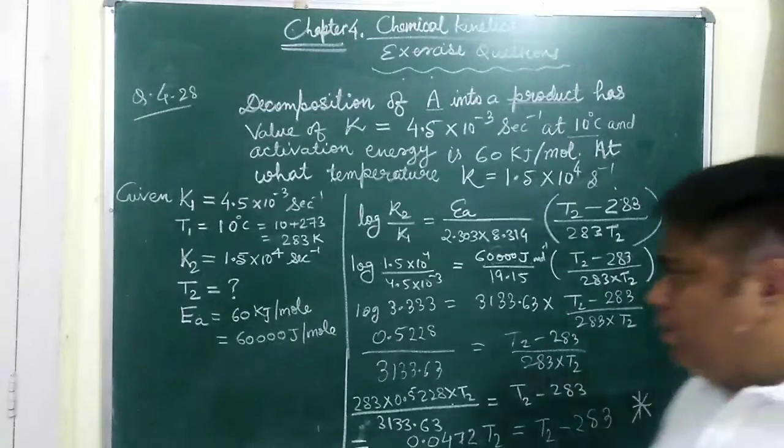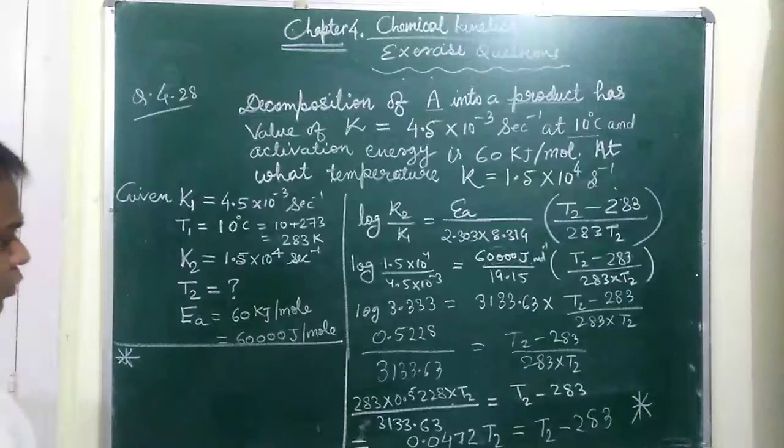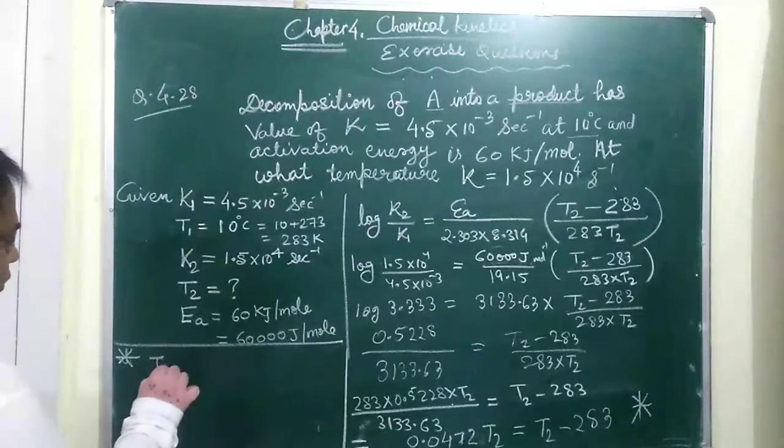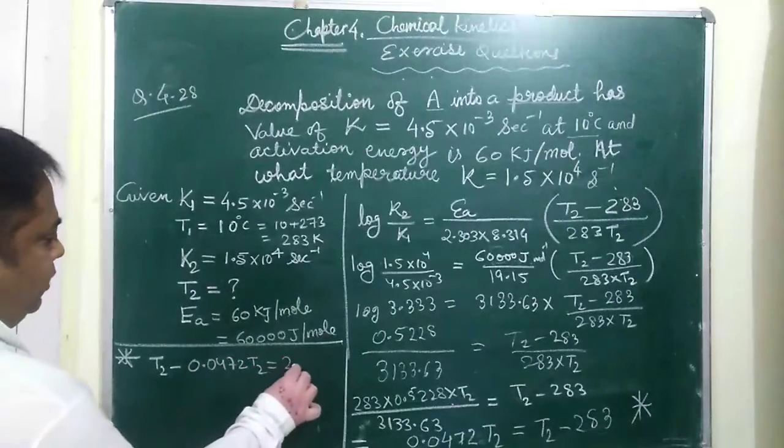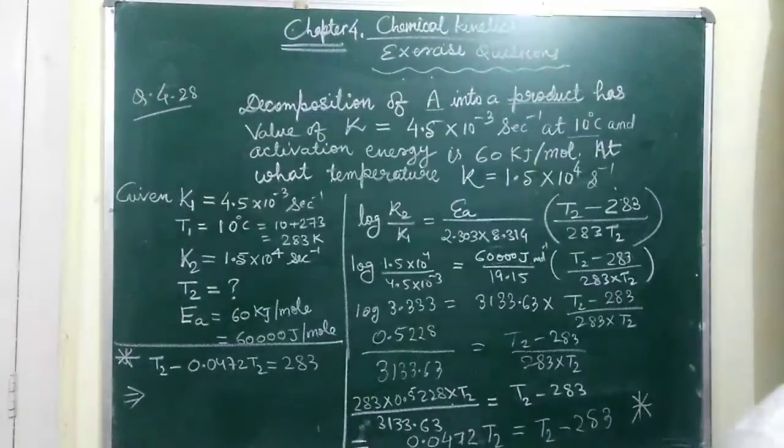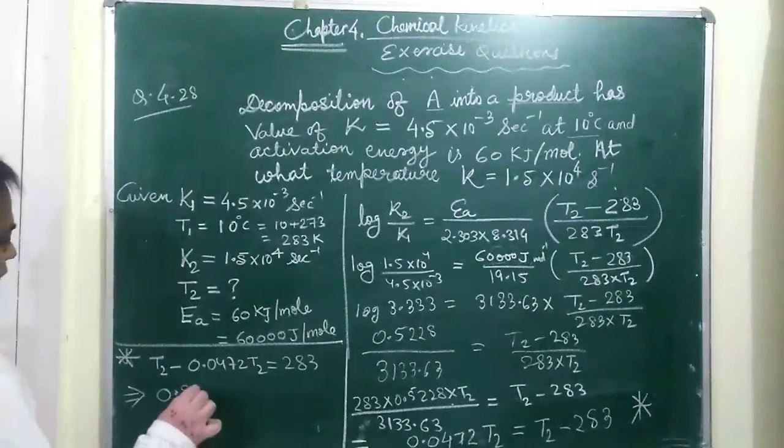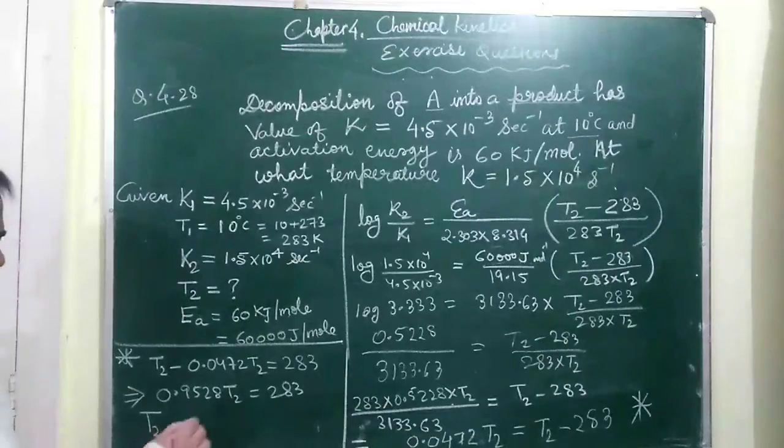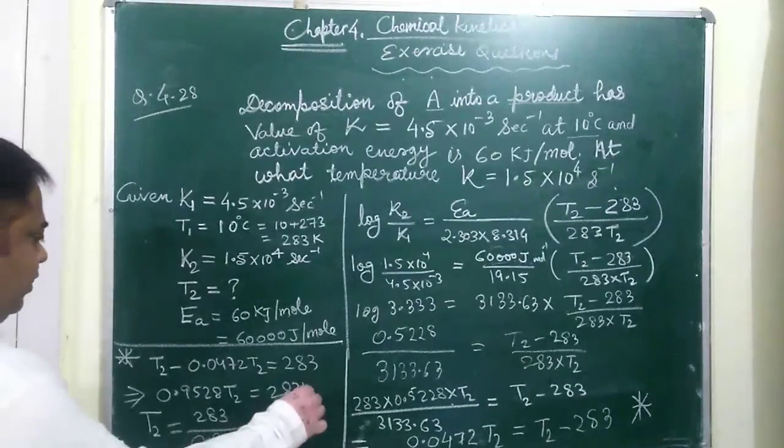So this value T2 comes out to be 0.0472 T2 is equal to T2 minus 283. So let me take this equation over here now. Very clearly T2 minus 0.0472 T2 will be equal to 283. This implies 0.9528 T2 is equal to 283 and T2 is equal to 283 by 0.9528.